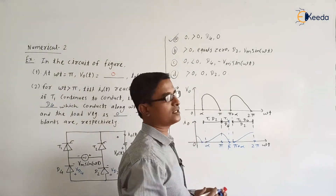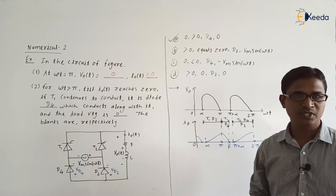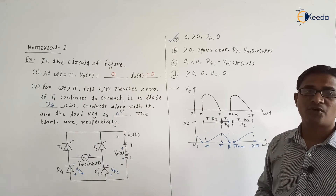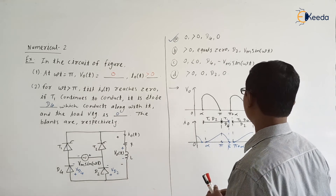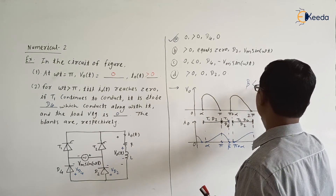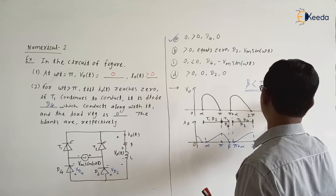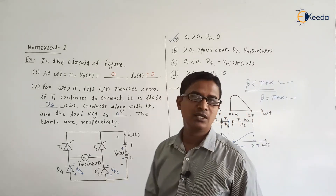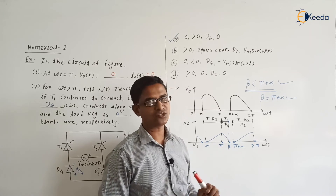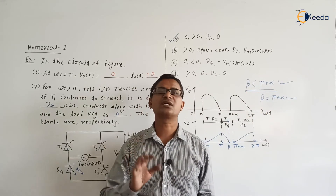Option A is the correct answer. This is about discontinuous conduction — the value of the inductor is lesser. For discontinuous conduction, beta is always less than pi plus alpha. For continuous conduction, beta is equal to pi plus alpha. Beta equal to pi plus alpha means the inductor releases energy all the way till pi plus alpha, giving continuous conduction. Beta less than pi plus alpha means discontinuous conduction.